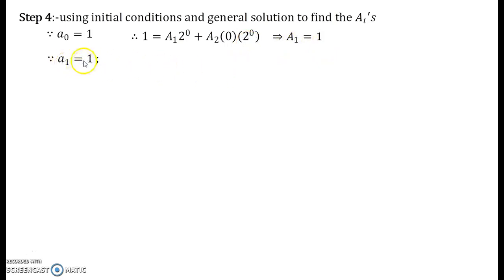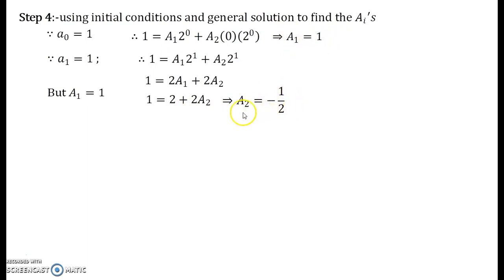And plug up a₀ equal to 1 in the general solution you obtain A₁ equal to 1. Now a₁ is given to you as 1 from the initial condition. So on substituting the value for n equal to 1 and initial condition a₁ equal to 1 you will get this equation. And from this equation you already know that capital A₁ is equal to 1. So on solving what you will get is A₂ equal to minus half. So now we have obtained A₁ equal to 1 and A₂ equal to minus half.